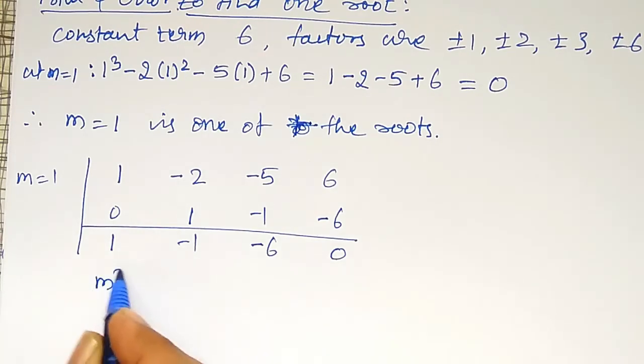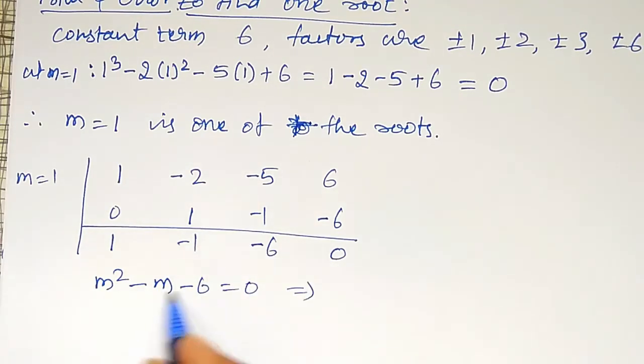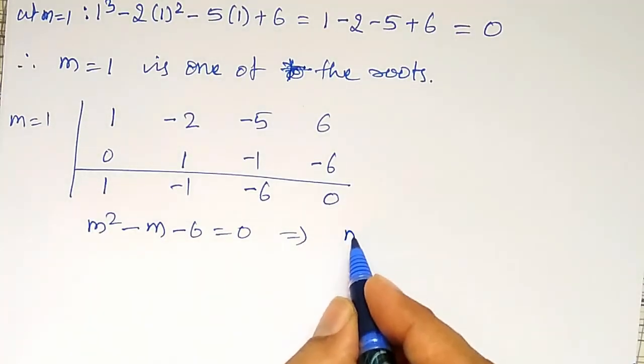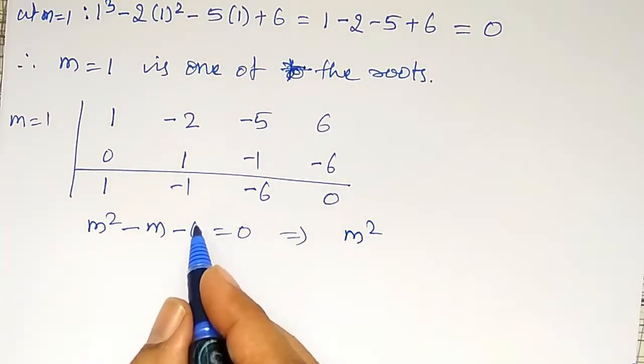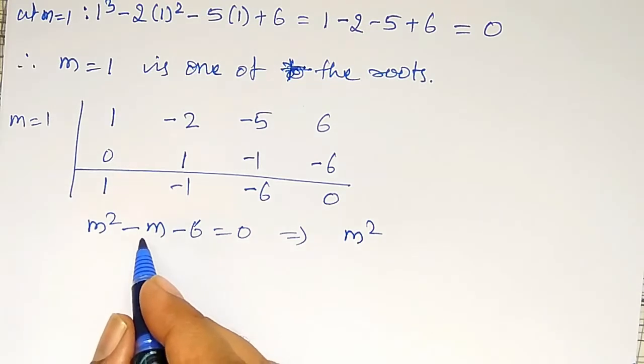That is, m² - m - 6 equal to 0. The roots of this quadratic equation can be easily calculated. That is, m², product you should get minus 6, addition or subtraction you should get minus 1.